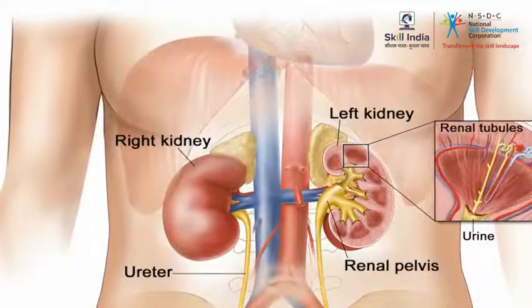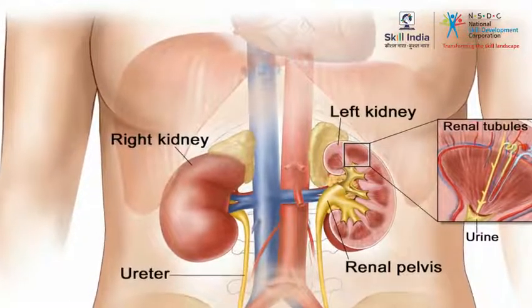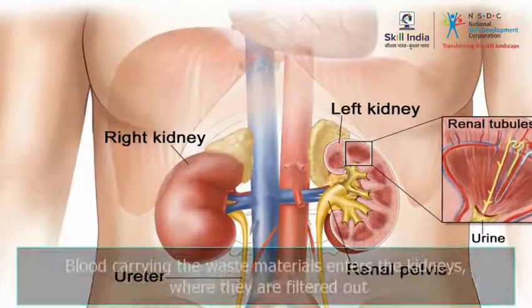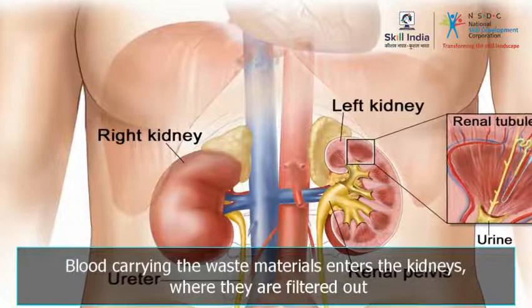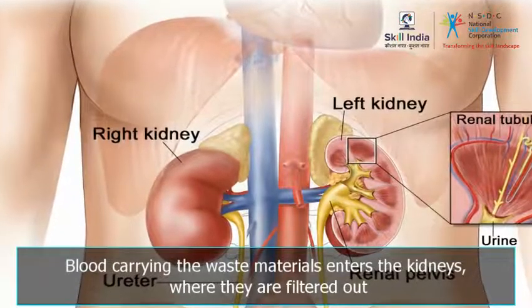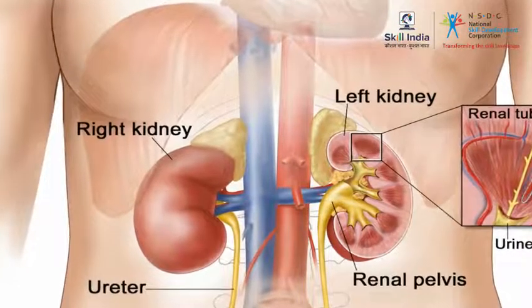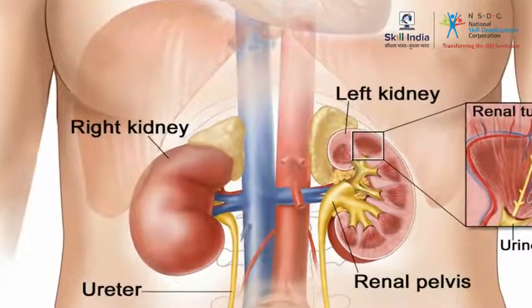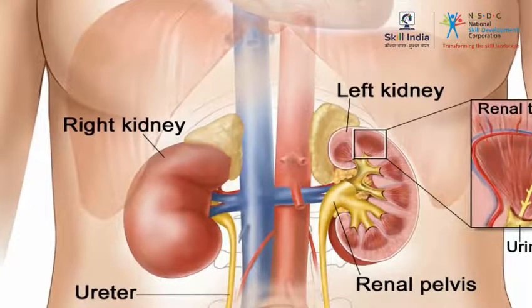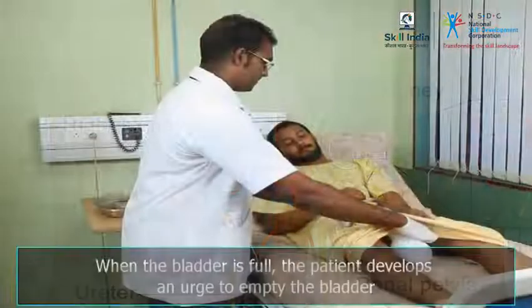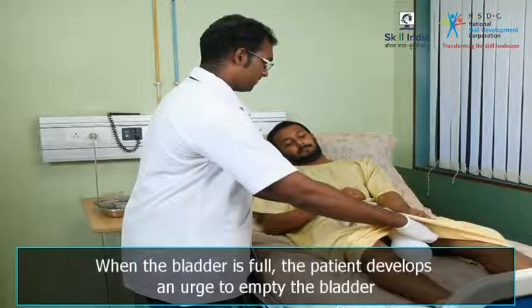The kidneys are the central units of the excretory system. Blood carrying waste materials enters the kidneys where they are filtered out and removed from the body with excess water in the form of urine. Urine is filled up in the urinary bladder, which opens into the genital area. When the bladder is full, the patient develops an urge to empty it. If the bladder is not emptied, it can lead to extreme discomfort.